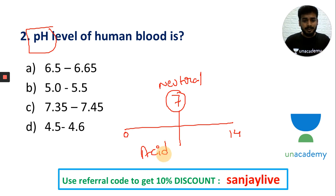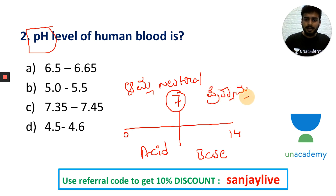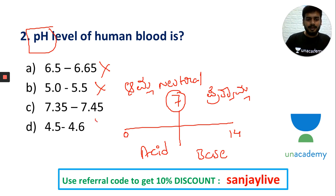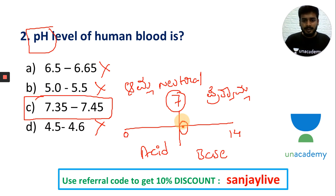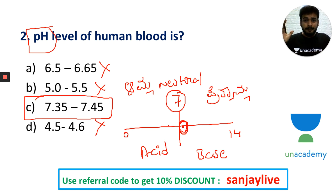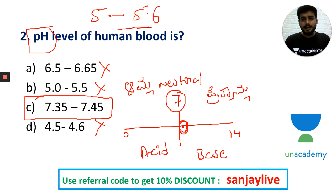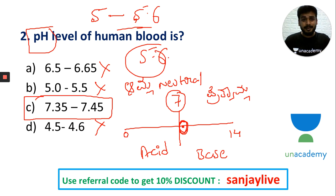The pH scale: zero to seven is acidic, seven to fourteen is basic. Human blood pH is 7.35 to 7.45 — slightly basic. Acid rain has a pH value of 5.6. Saliva can sometimes be acidic, in the pH range of 5.6.